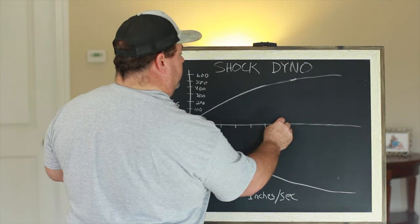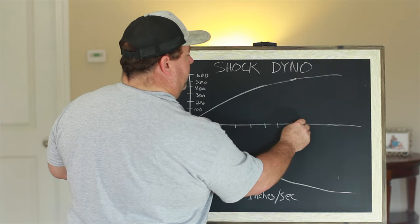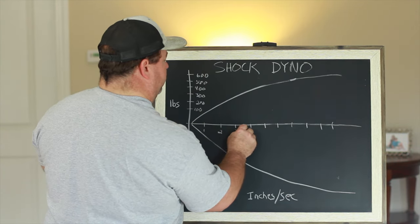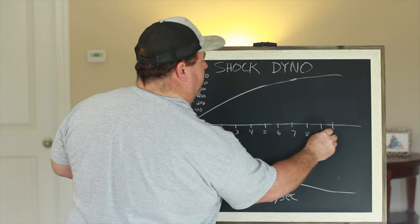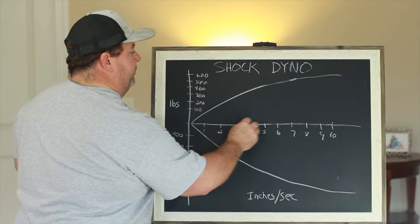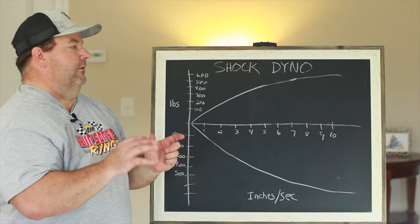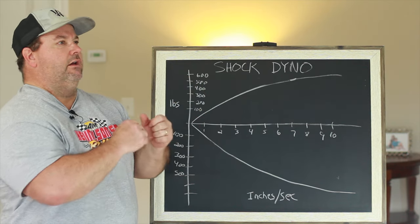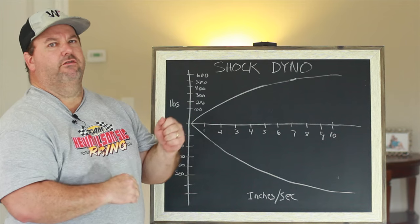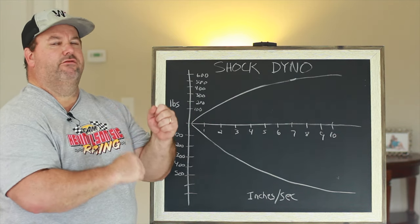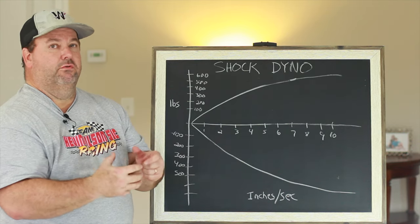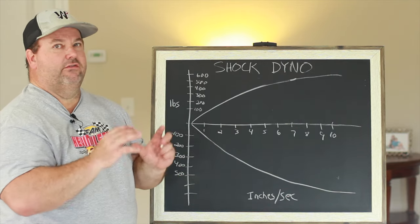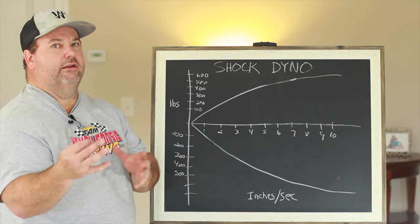There's another critical part of this chart, the X axis. As we come across through here, these are inches per second. Most of your charts go from 1 through 10. This represents inches per second. That doesn't mean your shock is being extended 10 inches in one second. Most machines will do about a two or two and a half inch travel on the shock, but the rate of travel equates to 10 inches per second or six inches per second.